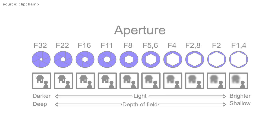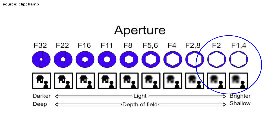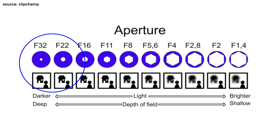If you have a small number like f1.8, the background is going to be really blurry — you're going to get what's called bokeh. If your f-stop number is higher, like f22, the subject in your foreground won't stand out as much from your background. Just know that your aperture will change more than just your exposure.